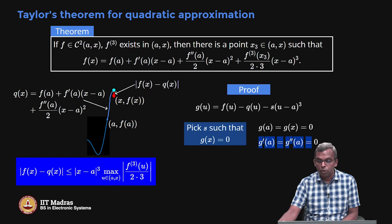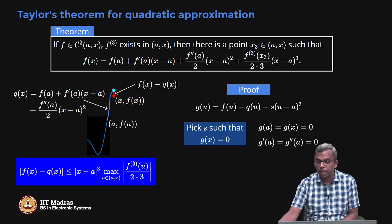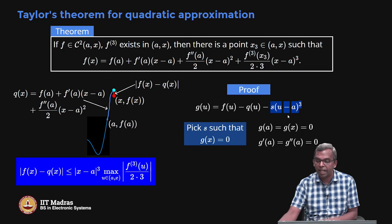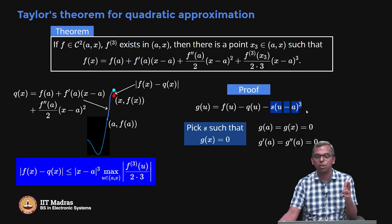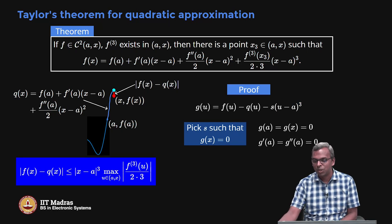This is easy to check: differentiate twice and you will see all these things are true because Q satisfies Q of A equals F of A, Q prime of A equals F prime of A, and Q double prime of A equals F double prime of A. As for the (u minus A) to the power 3 function: putting u equals A gives 0; differentiating once and putting u equals A gives 3 times (u minus A) squared, which goes to 0; differentiating again gives 6 times (u minus A), which also goes to 0. Only when you differentiate three times is there a problem, but we stop at differentiating twice.